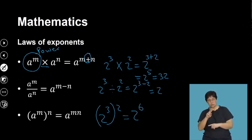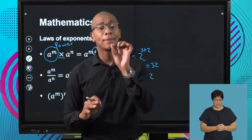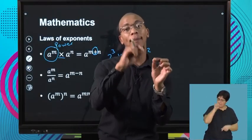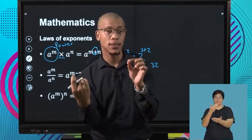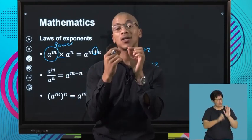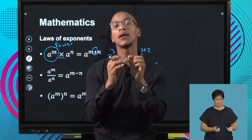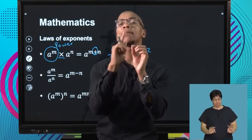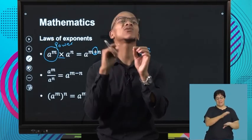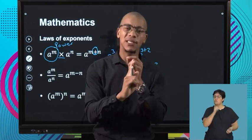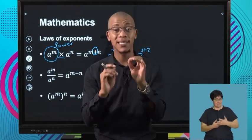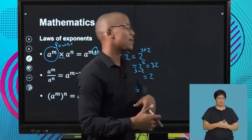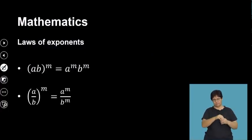What you need to understand here is that the bases need to be the same for you to apply the laws — that's the condition. The laws are there, but for them to be active and for you to use them properly, the bases need to be the same, whether it's multiplication or division.